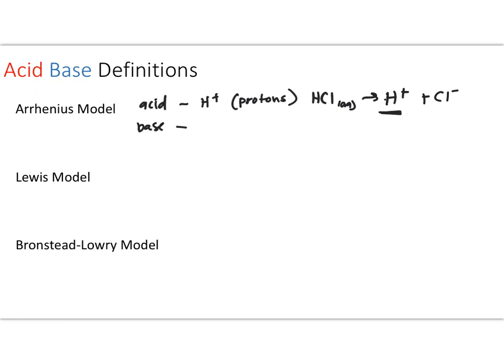Arrhenius bases are going to increase the hydroxide ion that is present in solution. So if I take something like sodium hydroxide, it's going to dissociate into sodium ion and hydroxide ion, and you're going to see an increase in the number of hydroxide ions present in that solution. This is the Arrhenius definition. It's very simple and straightforward.